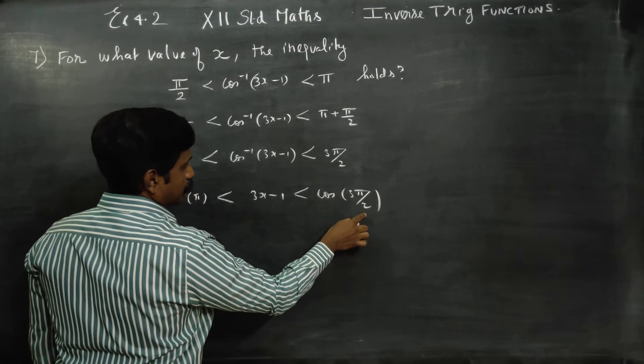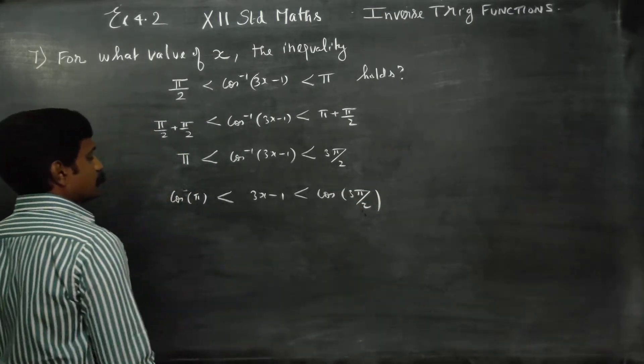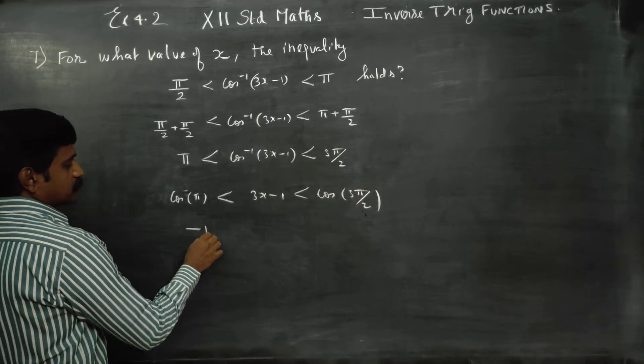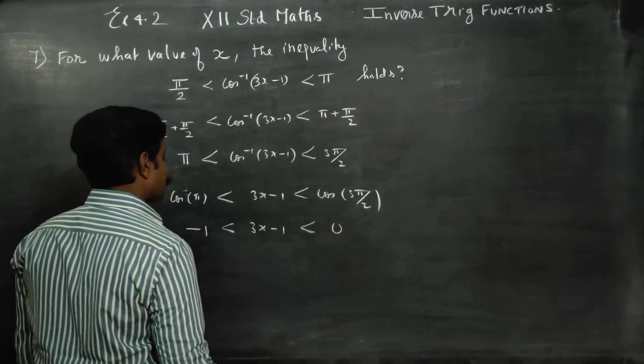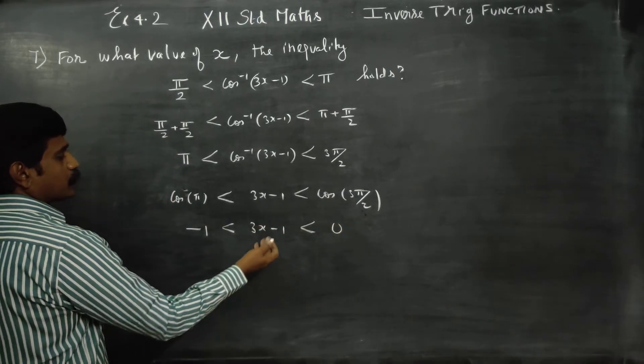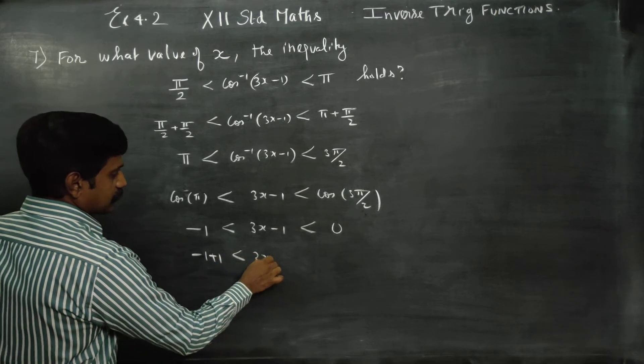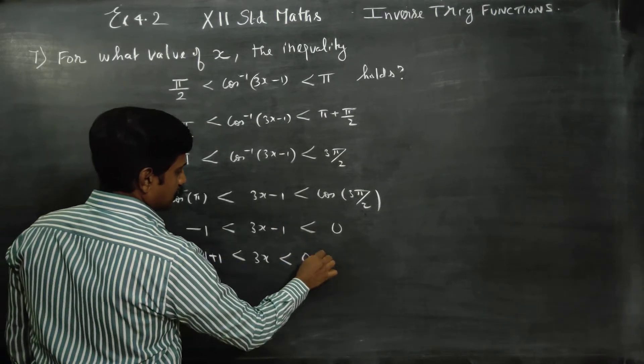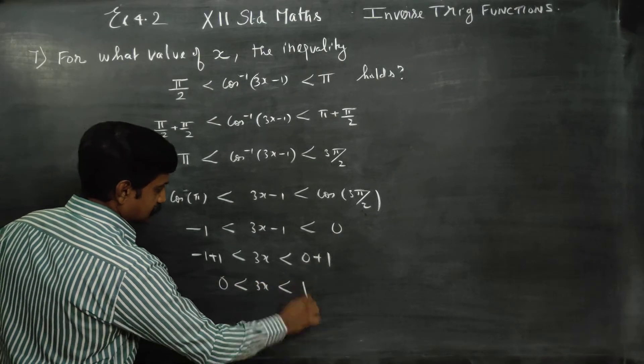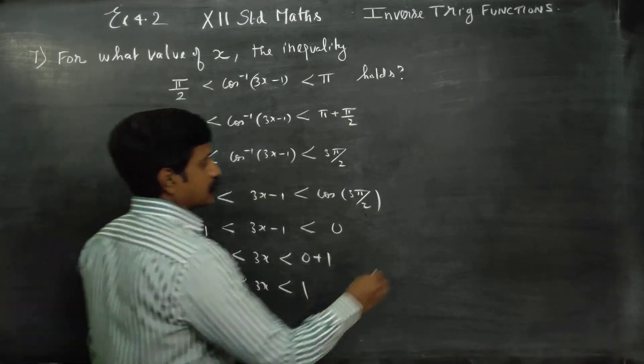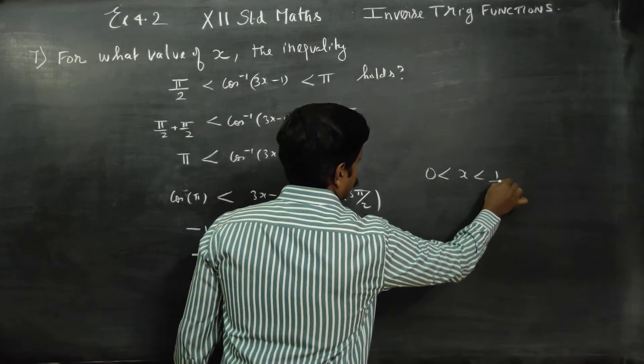Cos π is minus 1 and cos 3π by 2 is 0. So this gives minus 1 less than 3x minus 1 less than 0. Adding 1 to all parts and dividing by 3, we get 0 less than x less than 1 by 3.